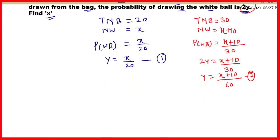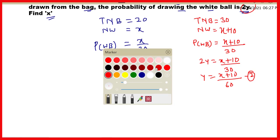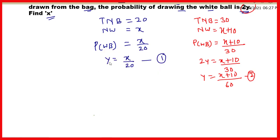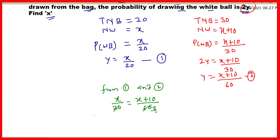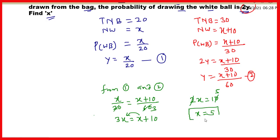Ab hum ise aage solve karenge. From equations 1 and 2: y is equal to x upon 20 and y is equal to x plus 10 upon 60. Toh yeh dono equal hone chahiye, therefore x upon 20 is equal to x plus 10 upon 60. Taking 3 to this side, 3x is equal to x plus 10. So 3x minus x gives 2x is equal to 10, therefore x is equal to 5.